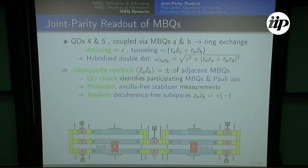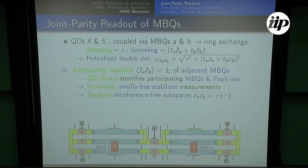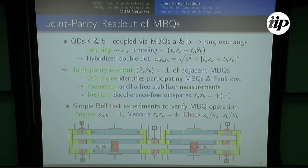Again, the quantum dots you choose identify which qubits participate and which operators you get — a universal feature that by spatially or geometrically picking which dots you operate on, you know which Pauli operators you attack. This is quite protected and an ancilla-free stabilizer measurement. In many devices like superconducting qubits, you need an ancilla qubit and entangling operations to execute a stabilizer, but in our system it's directly accessible — you directly measure the spectrum and get a result, and both qubits are entangled in general.